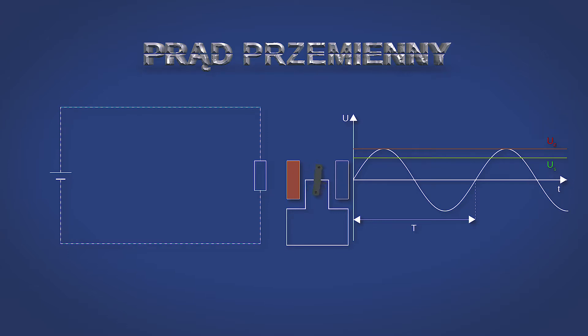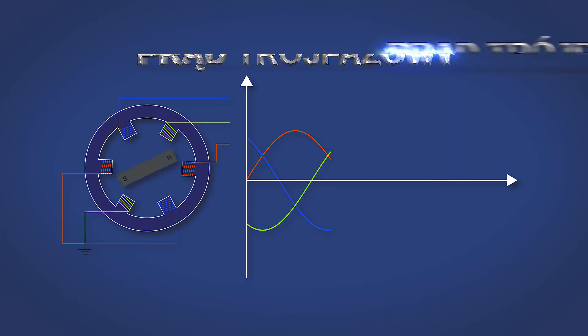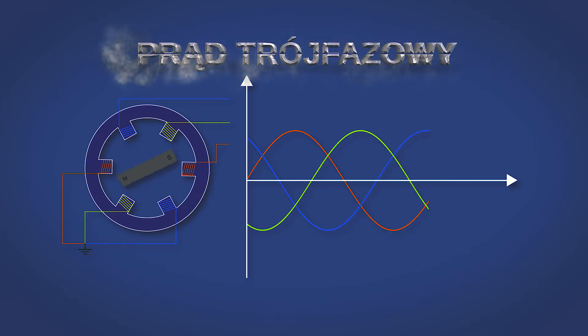Istotnymi parametrami dla prądu przemiennego są okres, częstotliwość będąca odwrotnością okresu, napięcie szczytowe i napięcie skuteczne. Napięcie szczytowe to najwyższa wartość przebiegu napięcia. Natomiast napięcie skuteczne to średnia wartość kwadratowa napięcia przemiennego. Dla przebiegu sinusoidalnego napięcie szczytowe jest równe pierwiastkowi z dwóch pomnożonemu przez napięcie skuteczne.